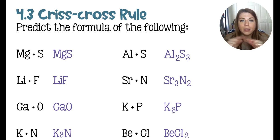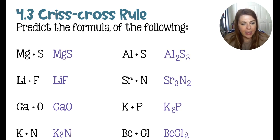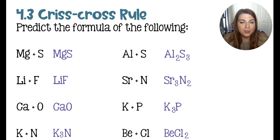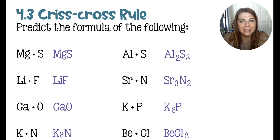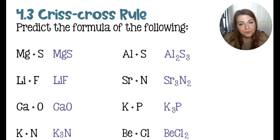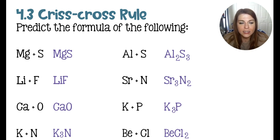Then we have K and N: K has a plus one, nitrogen has a minus three — crisscross to get K₃N. Aluminum and sulfur: aluminum is in group 13, always with a plus three charge; sulfur is in group 16, always with a minus two charge — crisscross to get Al₂S₃. Strontium and nitrogen is a two and a three — crisscross gives a three and a two, no reducing needed.